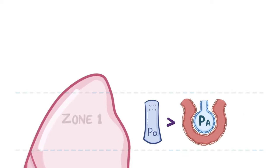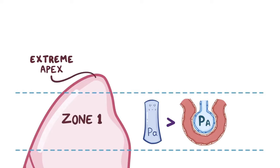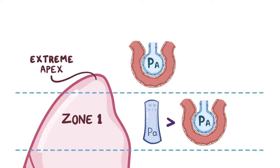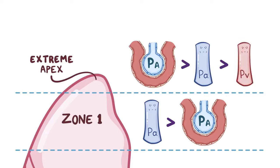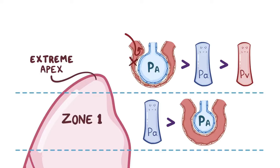In Zone 1, at the extreme apex of the lungs, pressure in the alveoli is higher than pressure in the arterioles, which is still higher than pressure in the venules. In this zone, blood does not flow because the arterioles get crushed by the relatively higher pressures in the nearby alveoli.